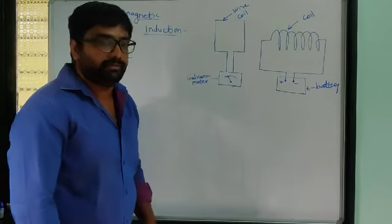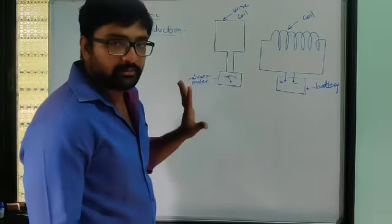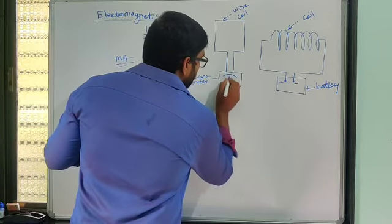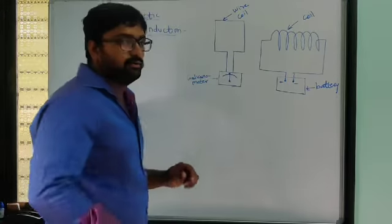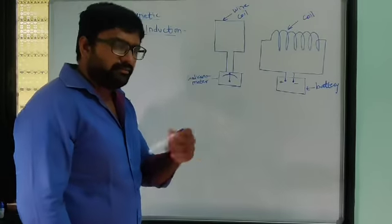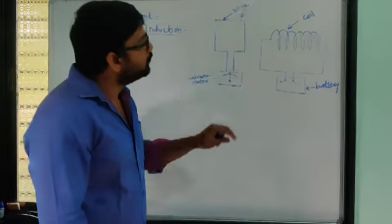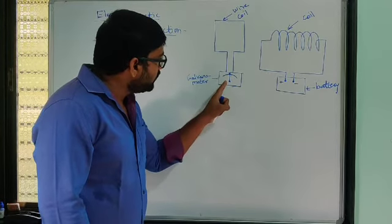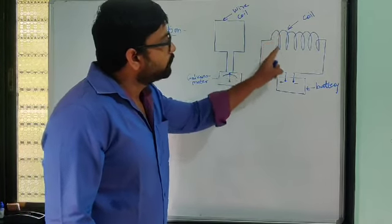Initially with no current passing through the first coil, the galvanometer shows zero reading. The galvanometer can show reading in both directions depending on the direction of current. For now, the important thing is that zero is at the middle, and galvanometer is stable when no current flows.